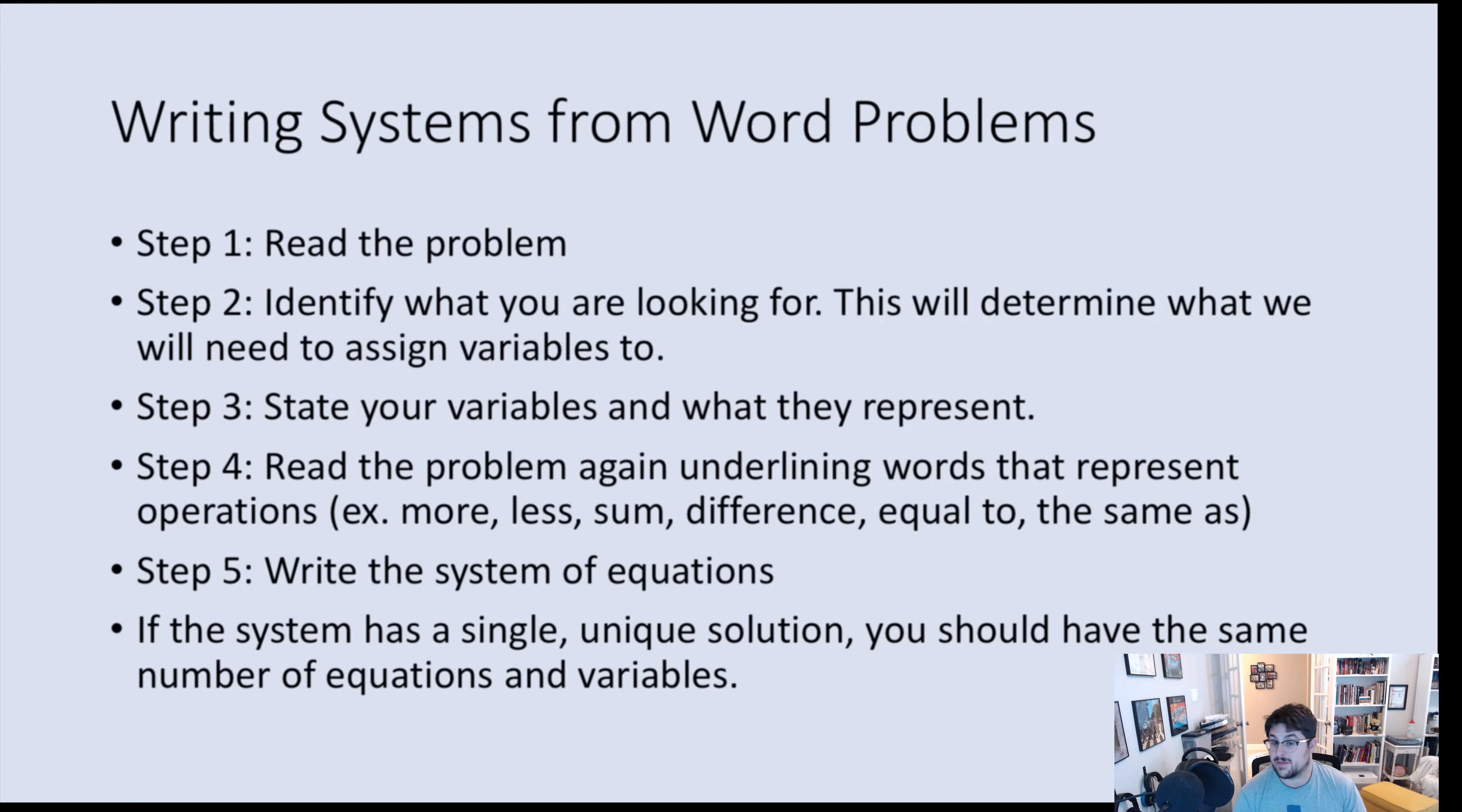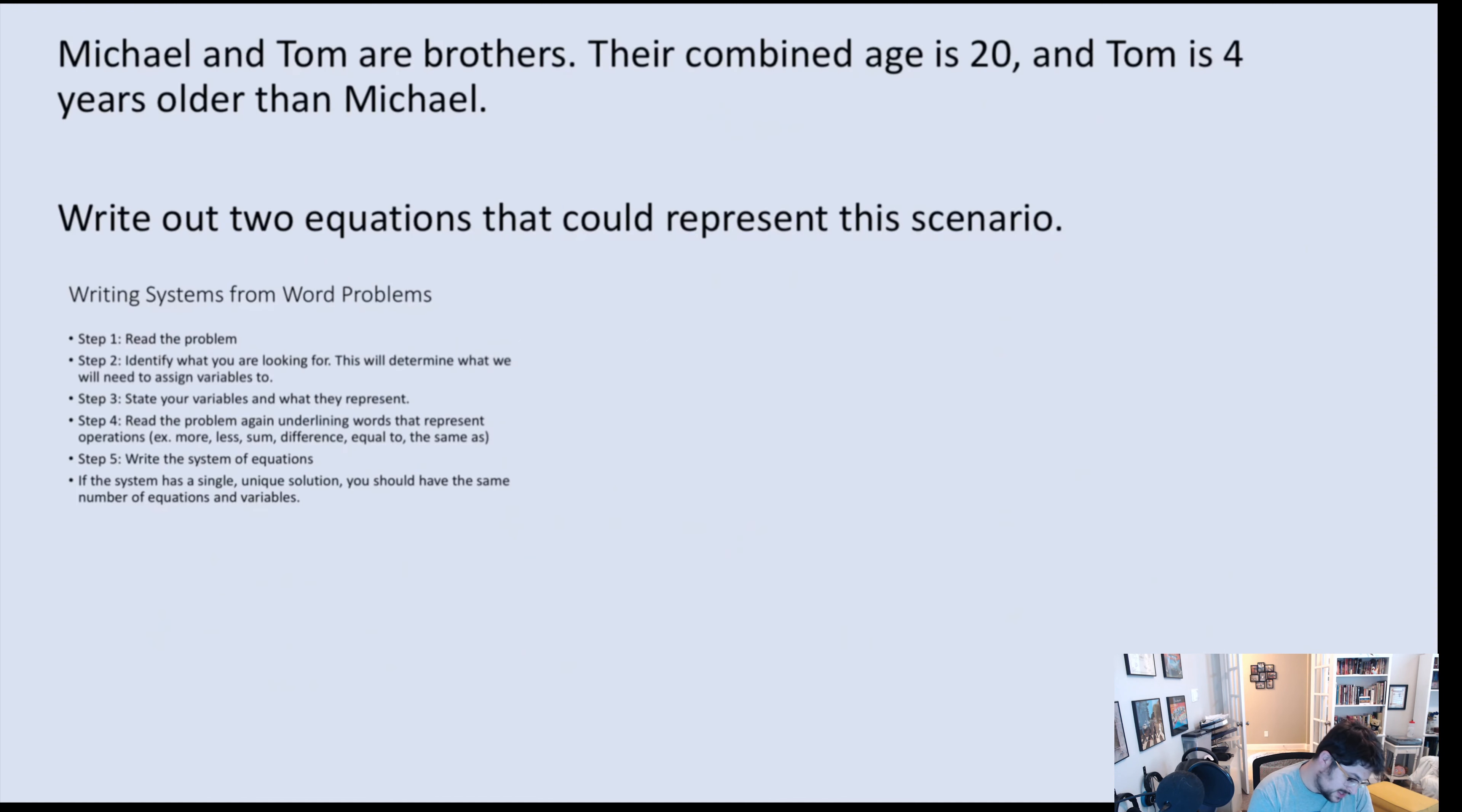Turn this into a system of equations. And then if we have a unique solution, we should have the same number of equations and variables. What I mean by that is we have two equations, we should have two variables. If we have three equations, we should have three variables. That's kind of how this stuff works. Let's go ahead and give this a shot.